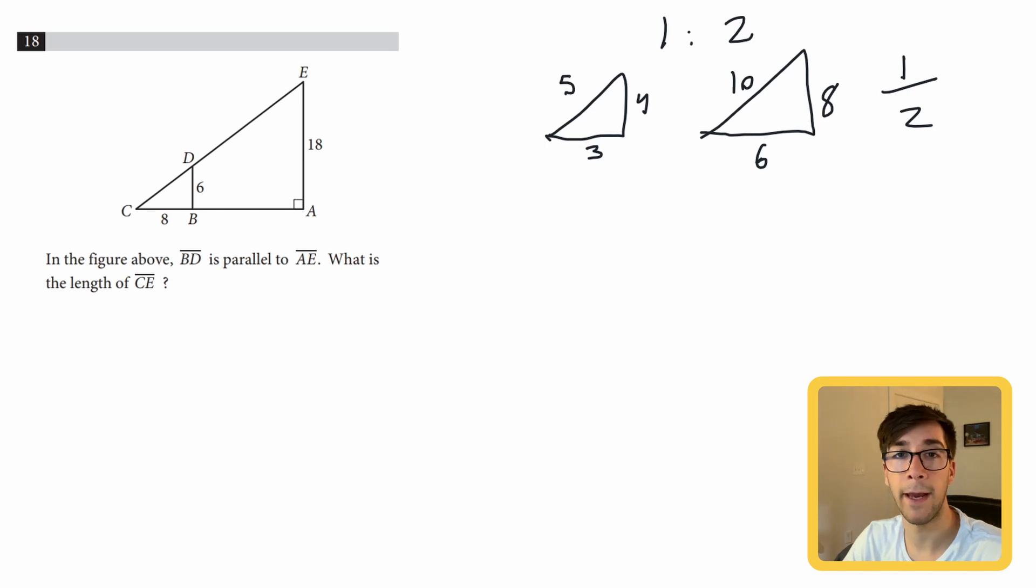The first way is with angle-angle, meaning if two angles are the same in the triangles, they're similar triangles. If we knew this angle was blue here and this one was blue here, and we also had a right angle on this one and a right angle in this one, because they have the same angles, we know they're similar triangles.